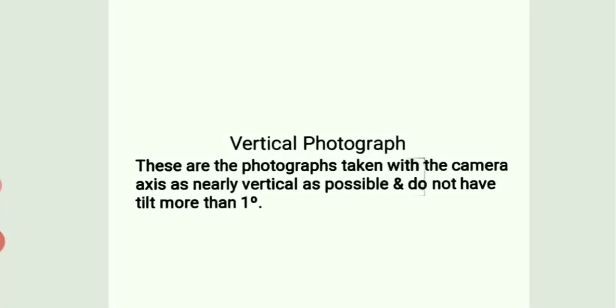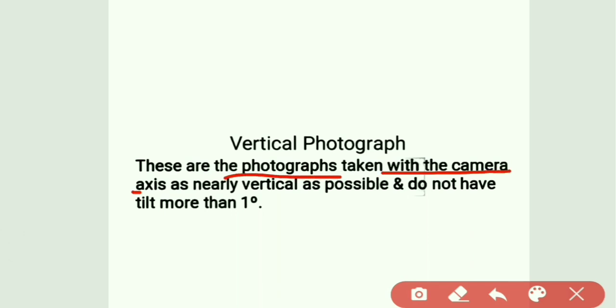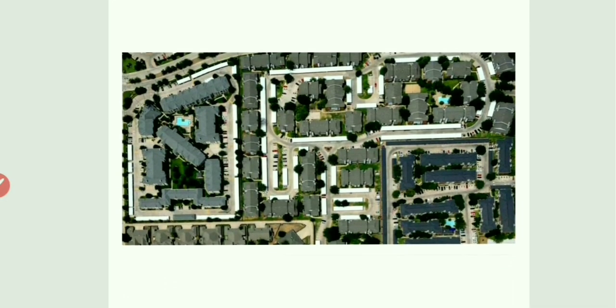Let us first see about the vertical photograph. Vertical photographs are photographs which are taken with the camera axis as nearly vertical as possible and do not have tilt more than one degree. Camera axis bilkul vertical hota hai aur tilt nahi hota — angle one degree se zyada nahi hota — aise photographs ko vertical photographs kehenge.